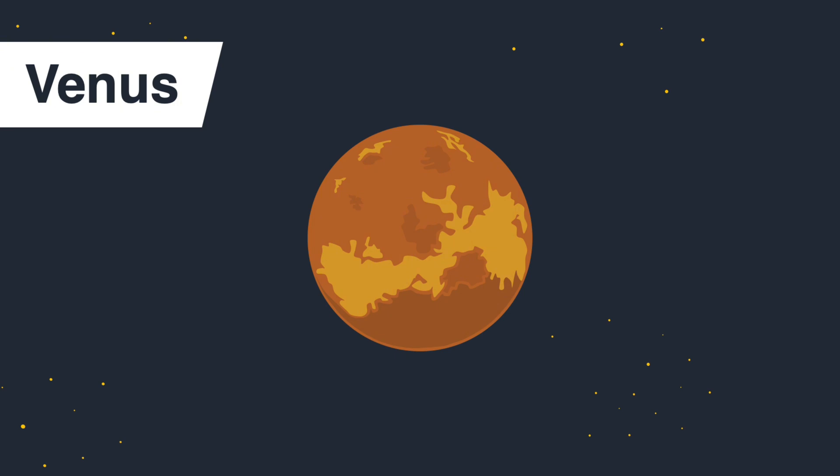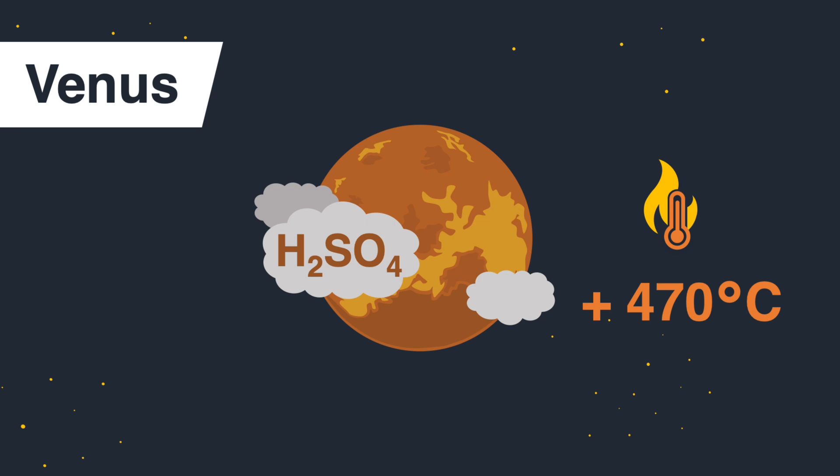Venus is similar in size and composition to Earth, but radically different in climate. Its thick carbon dioxide atmosphere traps heat in a greenhouse effect, making it the hottest planet in our solar system, with surface temperatures around 470 degrees Celsius. Venus is also covered in dense clouds of sulfuric acid, hiding its volcanic surface.